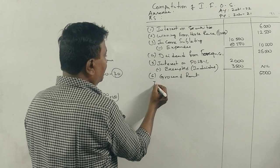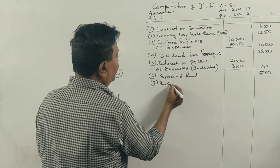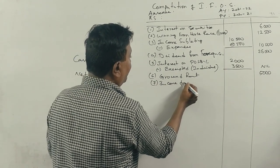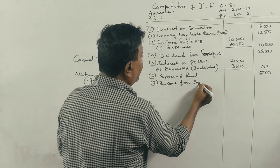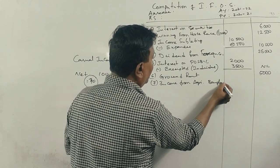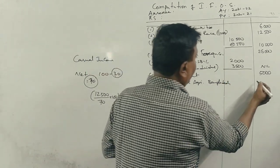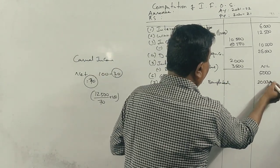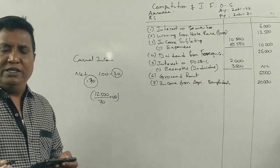Next point, income from agriculture in Bangladesh. Income from agricultural income in Bangladesh, which amount? 20,000, fully taxable. That's right, exactly.